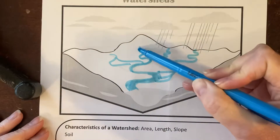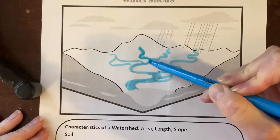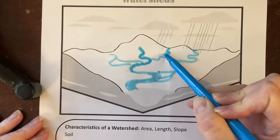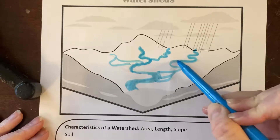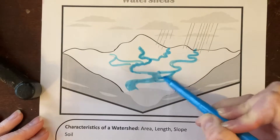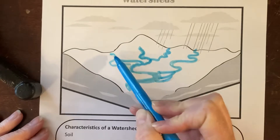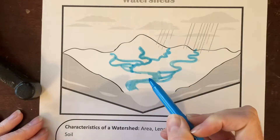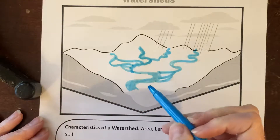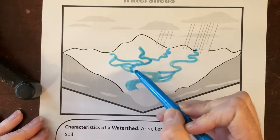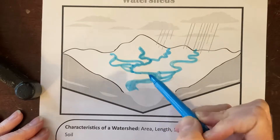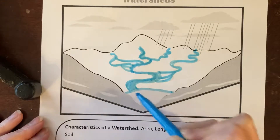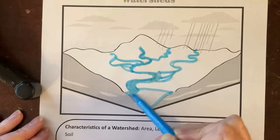So if our main river — the thicker one — is the Santa Clara River, then this might be San Francisco Creek, this might be Bouquet Canyon Creek, and over here might be Placerita Canyon Creek. All of these feed into the Santa Clara River, which flows through Santa Clarita, past Fillmore and Santa Paula, and empties into the ocean between Oxnard and Ventura.